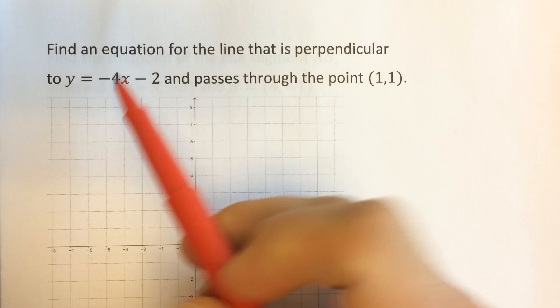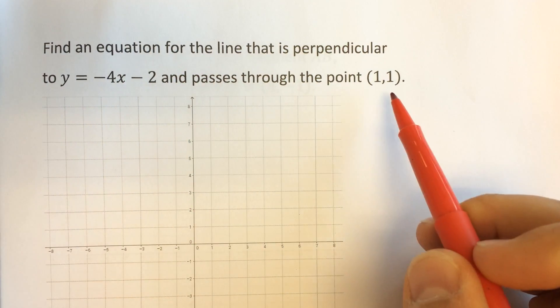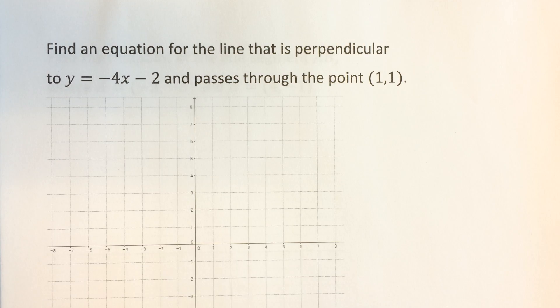We're going to find an equation for the line that is perpendicular to y equals negative 4x minus 2 and passes through the point (1,1).